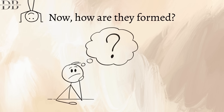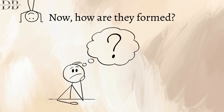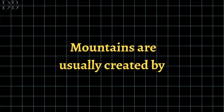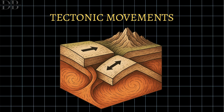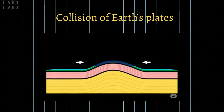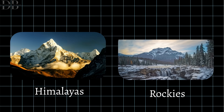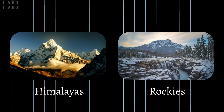Now, how are they formed? Mountains are usually created by tectonic movements, like the collision of earth's plates, which pushed the ground upward over millions of years. That's how massive ranges like the Himalayas or Rockies came to be.